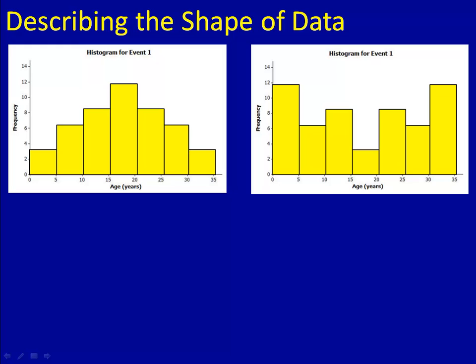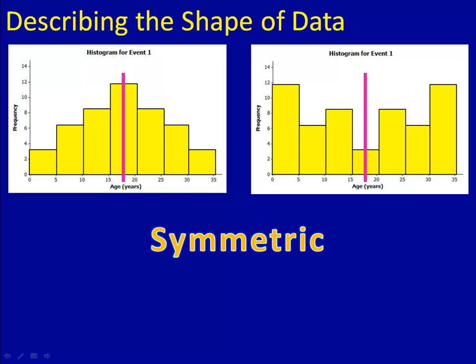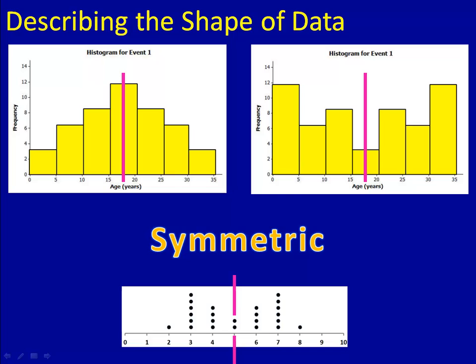Sometimes something interesting happens. Take a look at these histograms. If I draw a line through the middle of each of them, notice it's approximately the same on each side of that line. When the graph is the same on each side of the line, or very close to the same, we say that it's symmetric. Dot plots can also be symmetric, as you see in the example here.